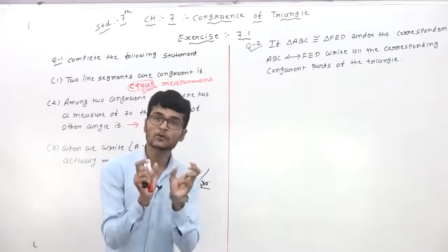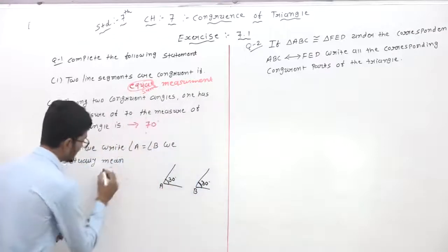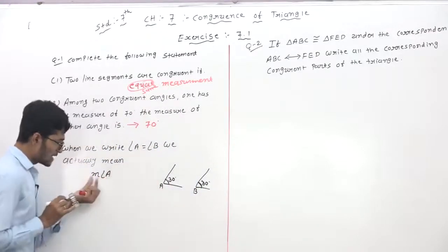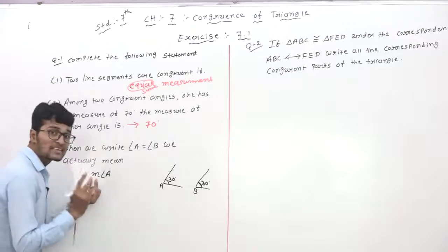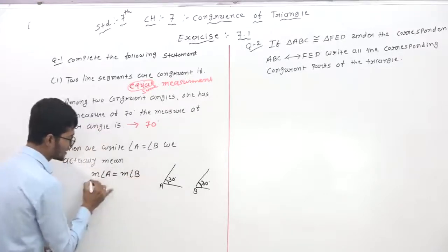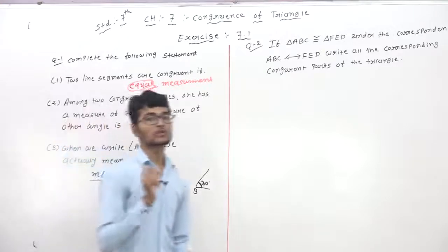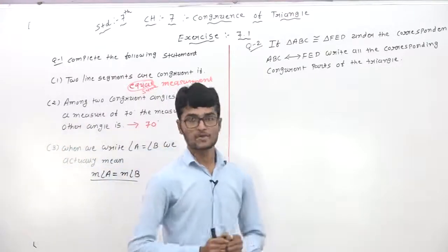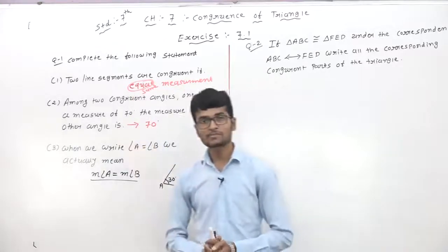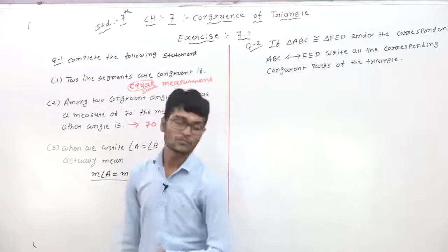But how to discuss it — the measure comes in. It means the same measure. So how to write it: the answer is measure of angle A is equal to measure of angle B. That is the actual meaning — measure angle A is equal to measure angle B.